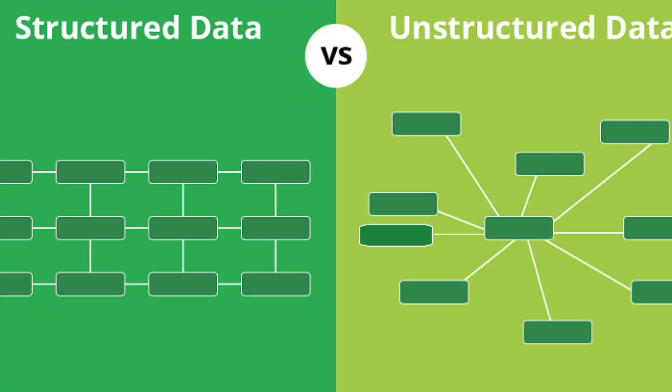Structured data is organized and easy to understand. Think of it as data stored neatly in a spreadsheet — rows, columns, and labels. Examples include customer names, phone numbers, or sales figures. Structured data is what powers many of the tools and reports businesses rely on daily.